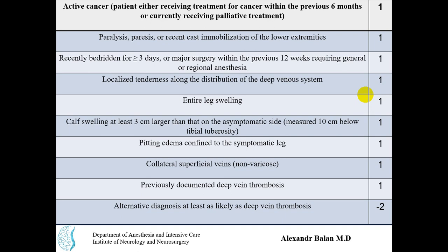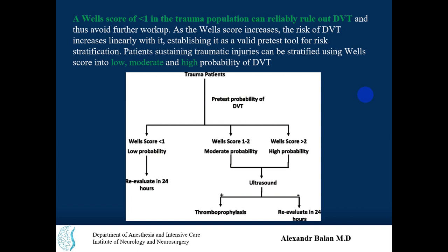A Wells score of less than one in the trauma population can reliably rule out DVT and avoid further workup. As the Wells score increases, the risk of DVT increases linearly, establishing it as a valid pre-test tool for risk stratification. Patients sustaining traumatic injuries can be stratified using the Wells score into low, moderate, or high probability of DVT.